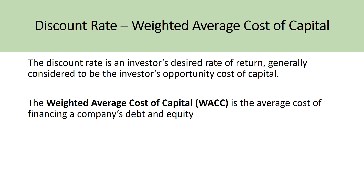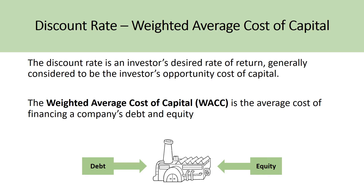Say for example you're an investor and you're considering four investment options: A, B, C, and D. If you decide to go with option B, there's an implicit opportunity cost that exists when you forego options A, C, and D. The discount rate used to value future cash flows accounts for that opportunity cost. The most common discount rate used is the weighted average cost of capital, which is the average cost of financing a company's two main sources of capital — debt and equity.